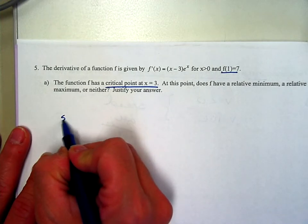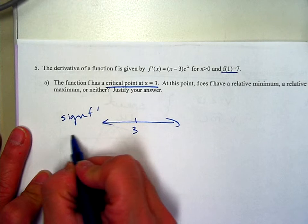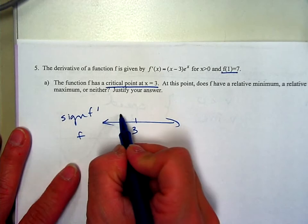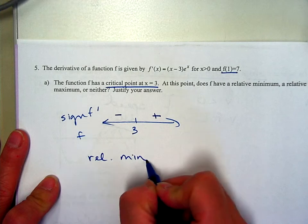So the sign of the derivative, I'm going to use 3 as my critical number, will give me information about f. The sign of the derivative is negative, positive. So I know that it's a relative min at x equals 3.